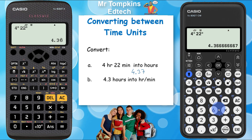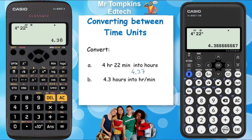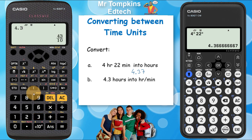Next, convert 4.3 hours into hours and minutes. So I need to go back the other way here. I'm going to start off by typing that decimal number into the old calculator — 4.3. I'm going to press the equal button and then I'm going to press that time key. You can see it just converts it straight away into 4 hours, 18 minutes and no seconds. So I'm going to write down 4 hours and 18 minutes.